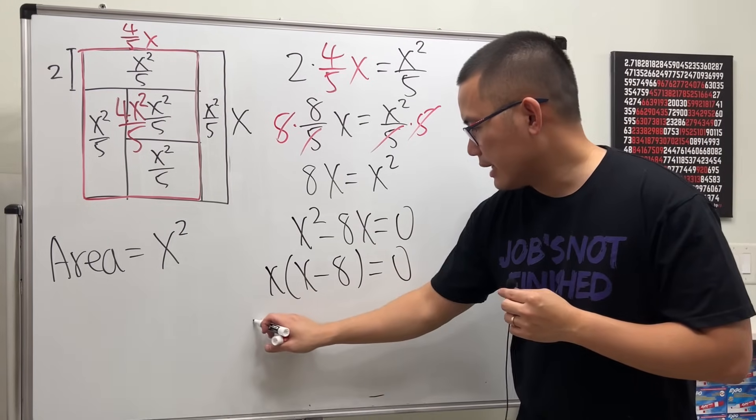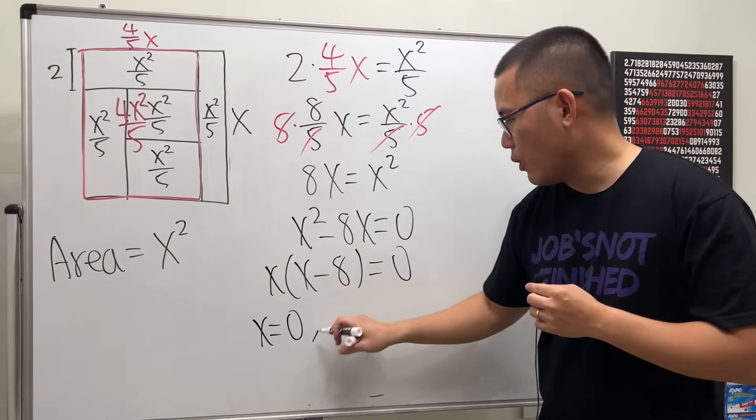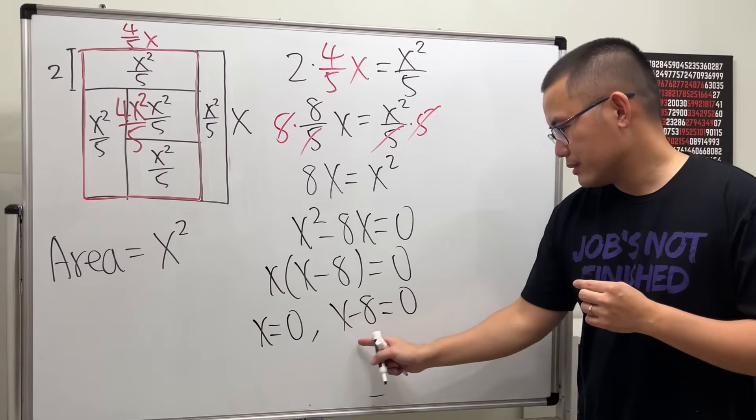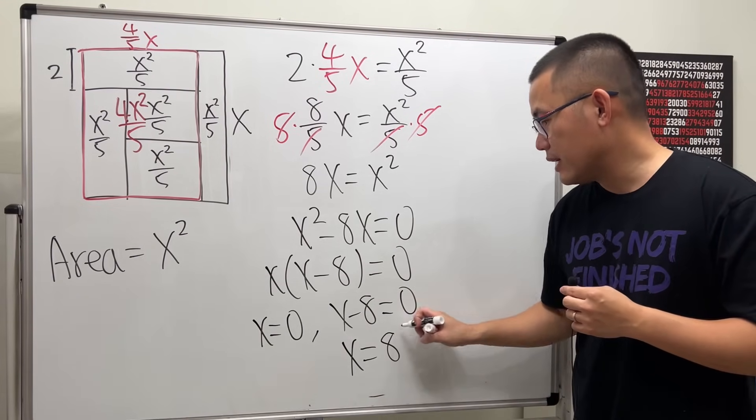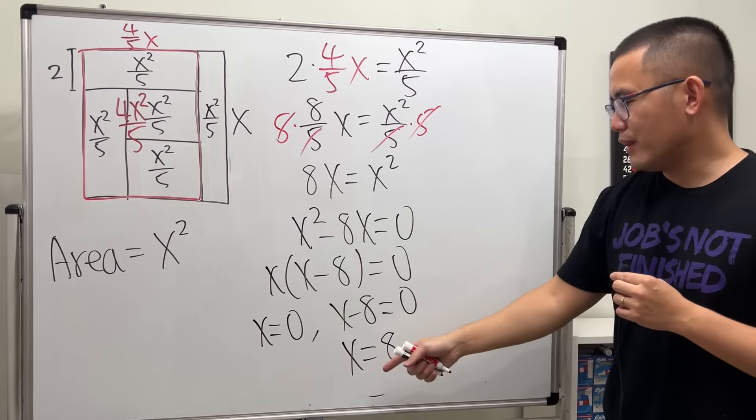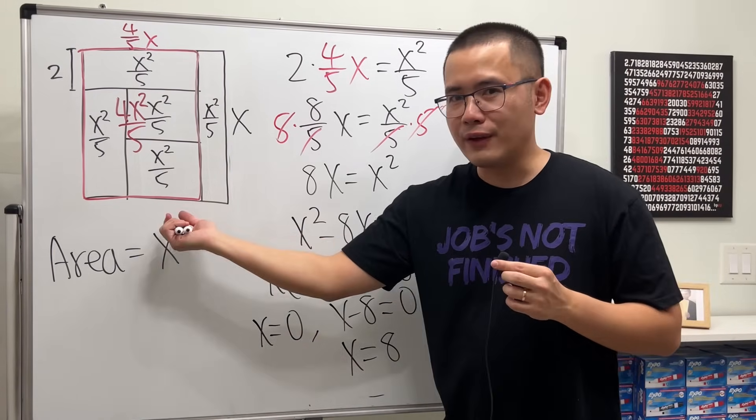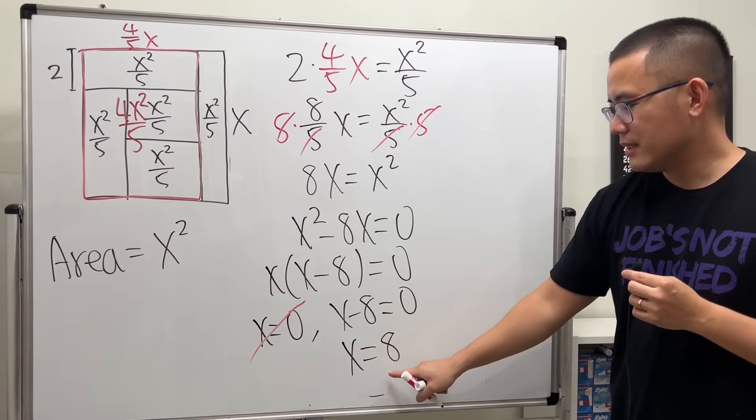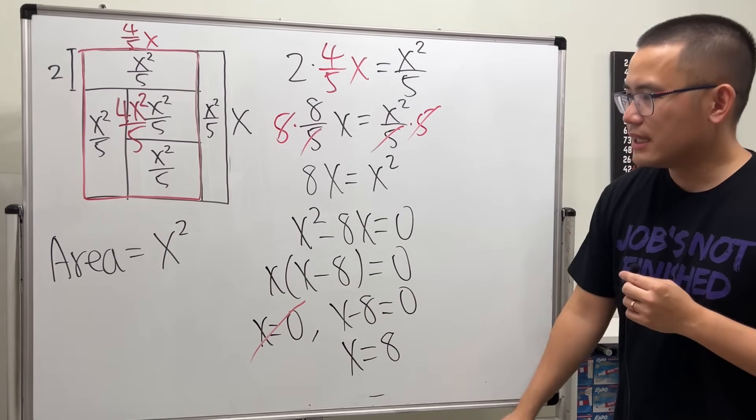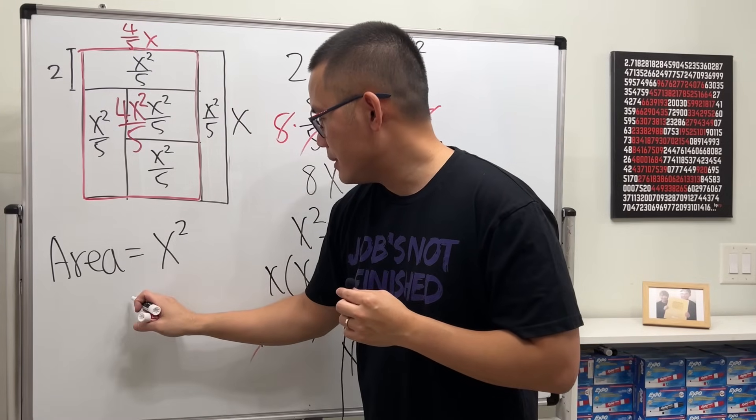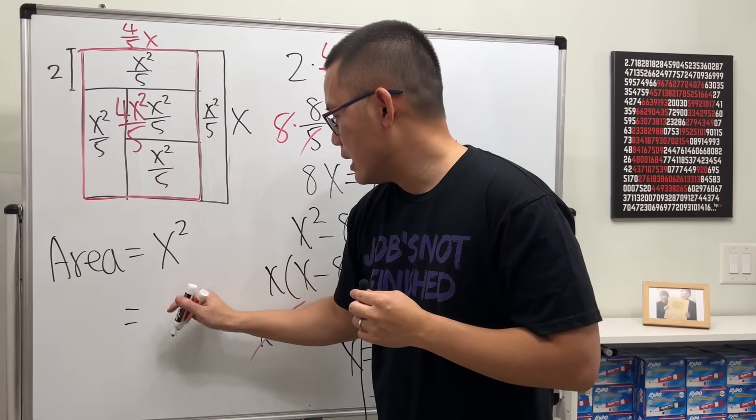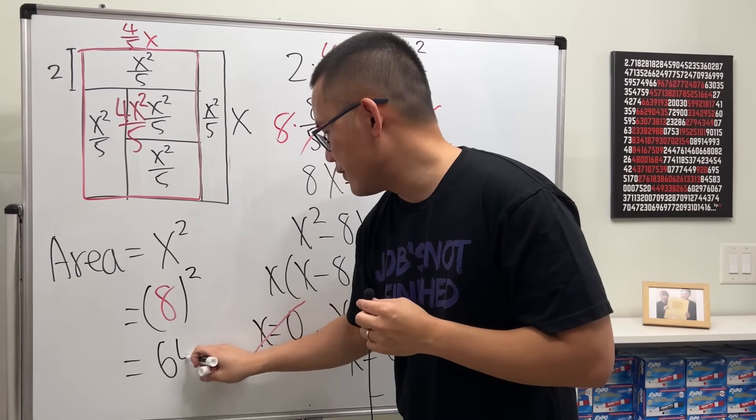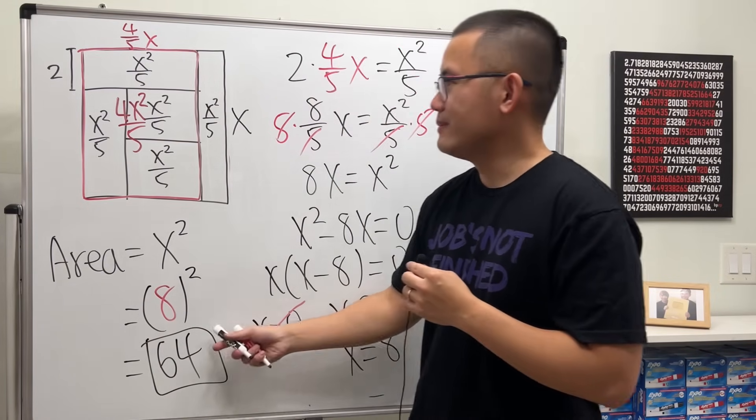So that means x is equal to 0, or x minus 8 is equal to 0, so x is equal to 8. Of course, we have a geometry question - if x is equal to 0, we don't have a square, so not this. We want x is equal to 8, so the area must be equal to 8 squared, so the area is 64. That's it.